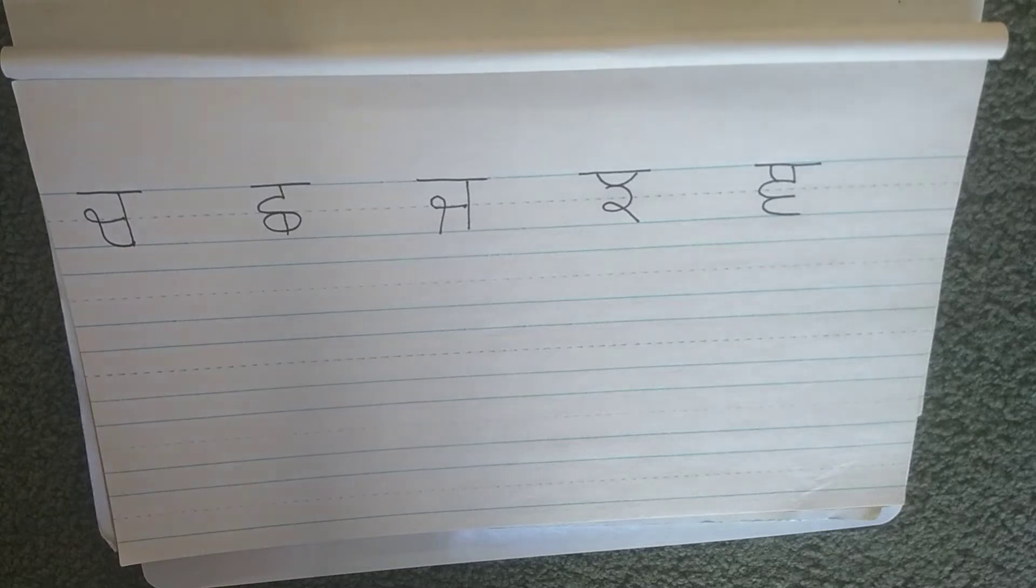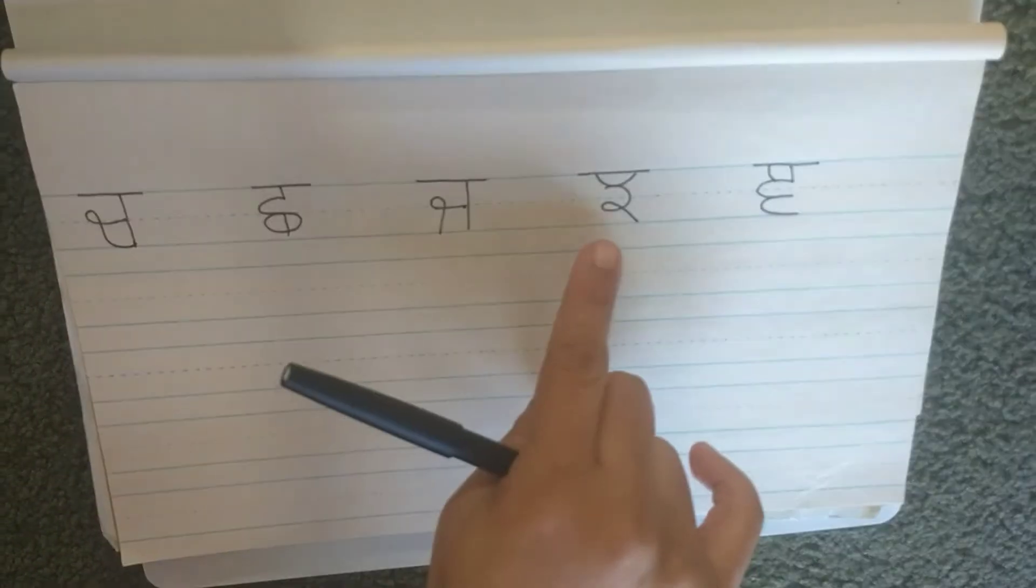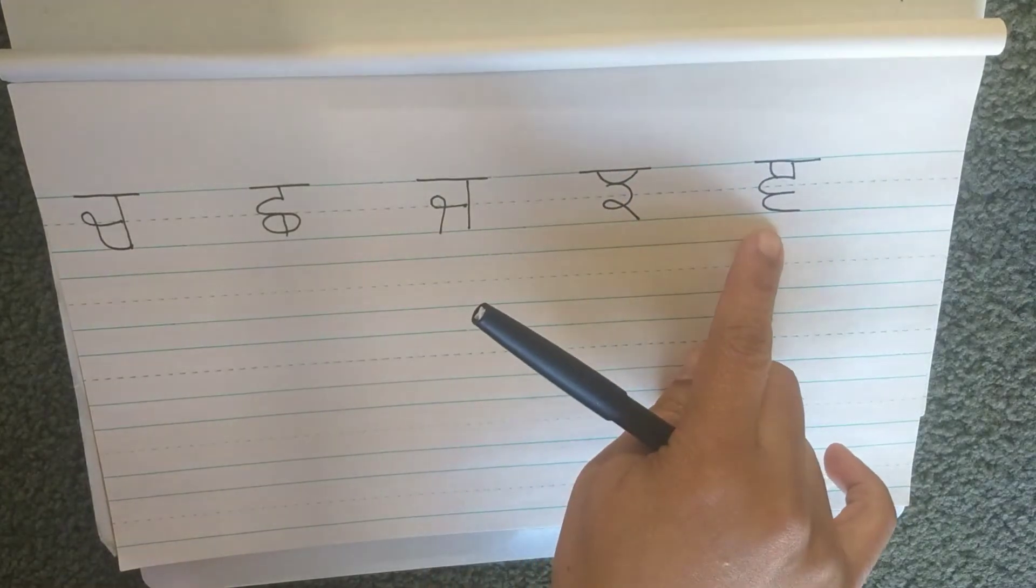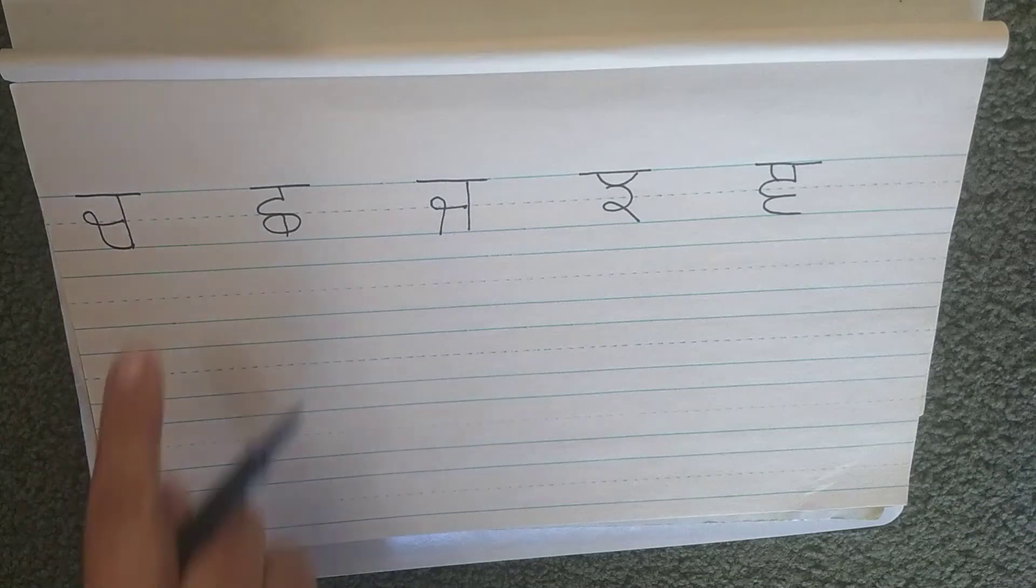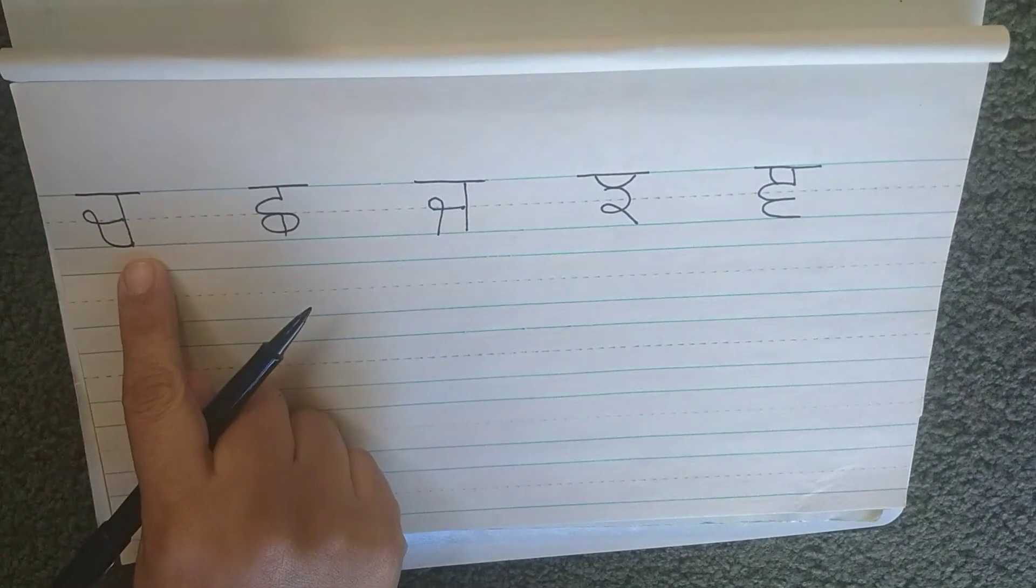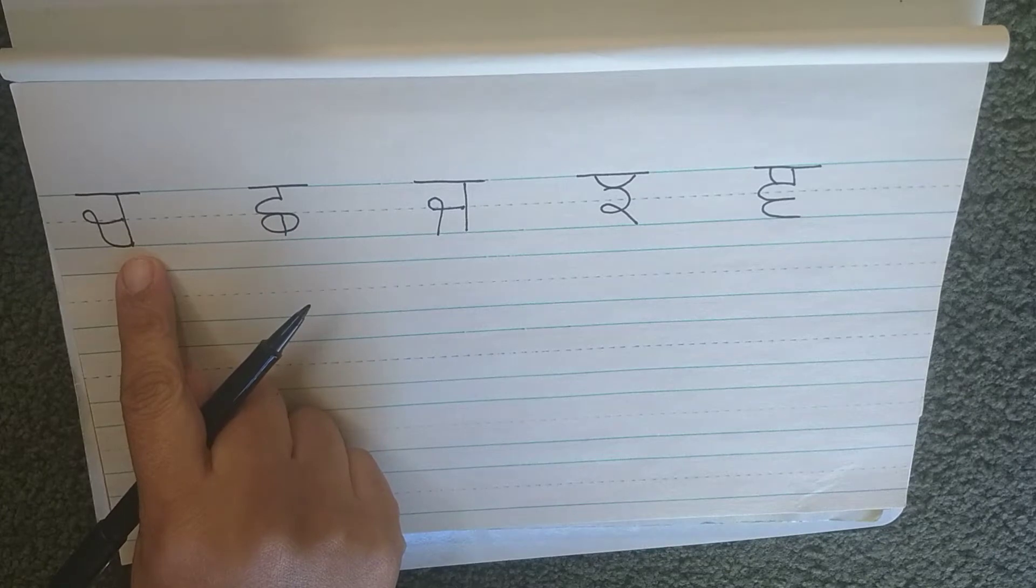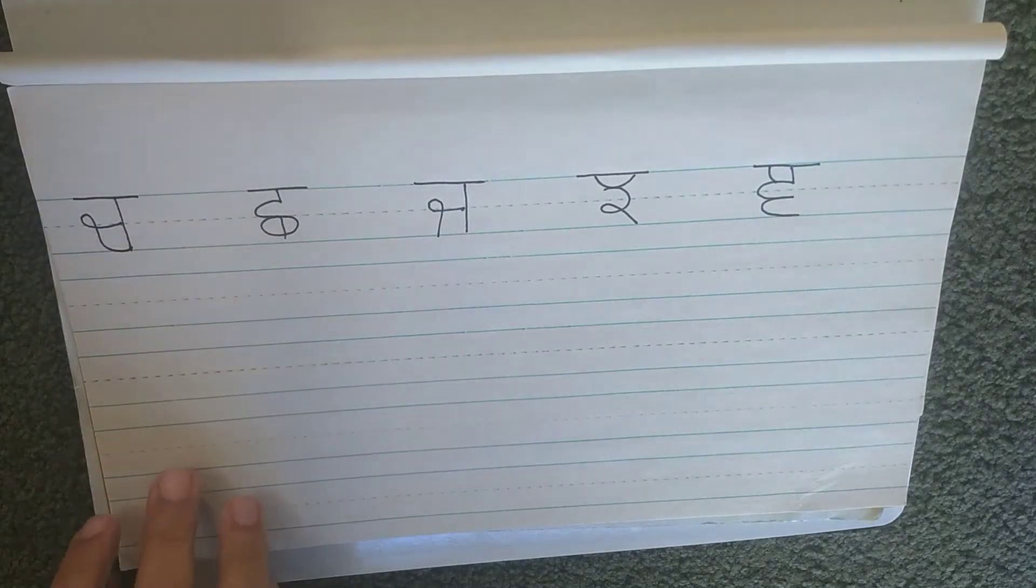The third line is chacha, chacha, jaja, chaja, nyanya. So the first letter is chacha like chuha. Chacha, chuha as mouse. Chacha chaar, ek, do, teen, chaar as number four. Chacha chaabi as in key.